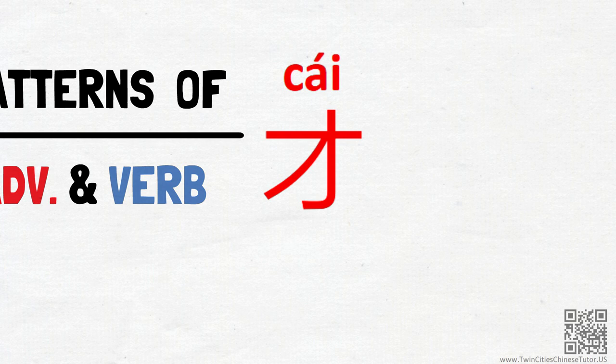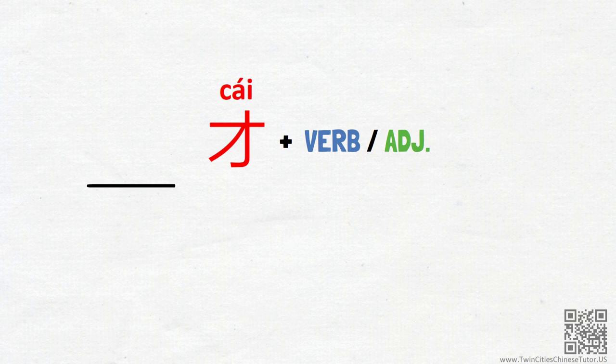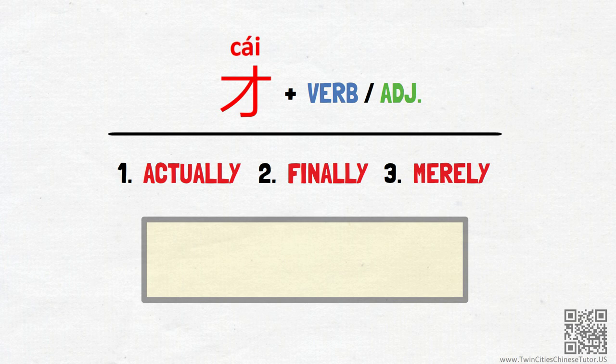As an adverb, 才 is usually placed right before a verb or an adjective in a sentence. There are three major ways it can be translated: actually, finally, and merely. These English words may seem quite different from one another, but there is an overarching theme here, which emphasizes the overturning of the previous expectation.